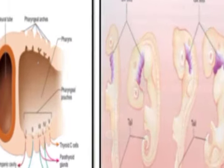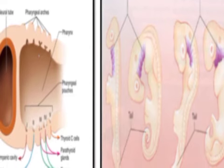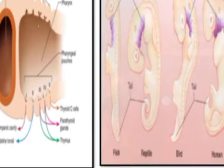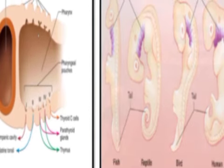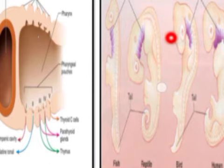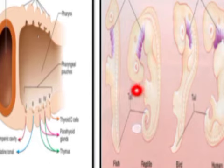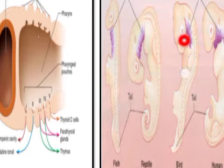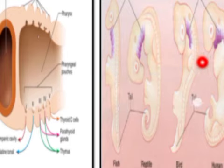You can observe here different embryos from different animals — fish, reptile, bird, and here, the human embryo, which belongs to mammals. You can see that all these embryos have pharyngeal pouches present.